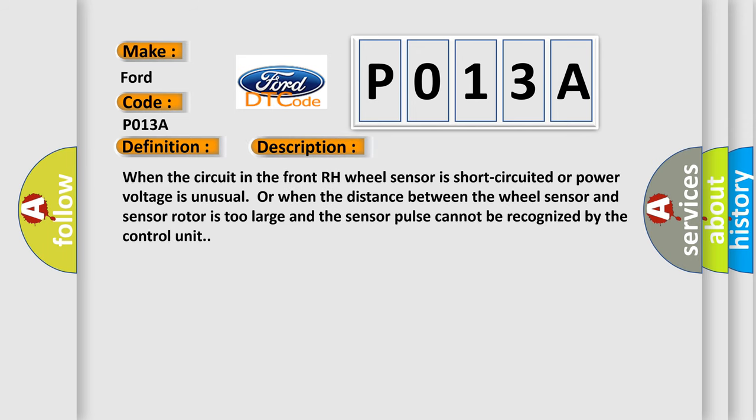When the circuit in the front RH wheel sensor is short-circuited or power voltage is unusual, or when the distance between the wheel sensor and sensor rotor is too large and the sensor pulse cannot be recognized by the control unit.